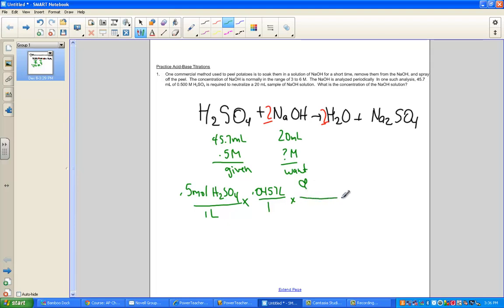Here's the heart of our stoichiometry ratio. What do we want over given? We want to know the base. Its coefficient is a 2. We started from the moles of acid. Its coefficient is a 1. 2 over 1 is our stoichiometric ratio.